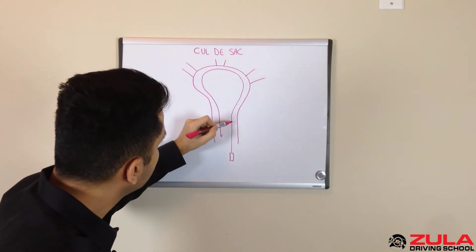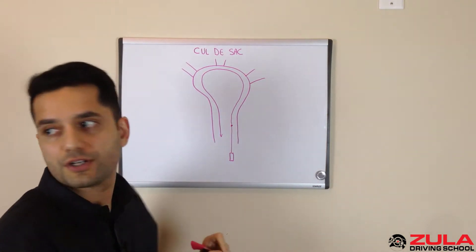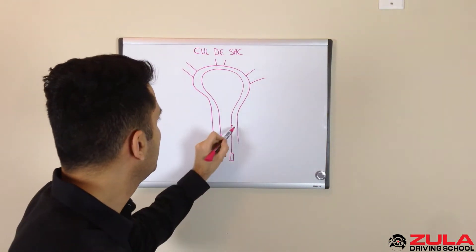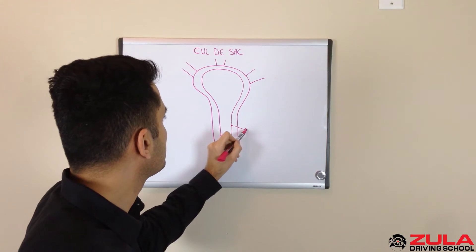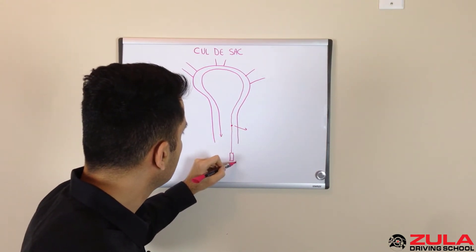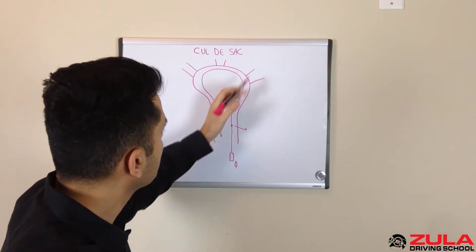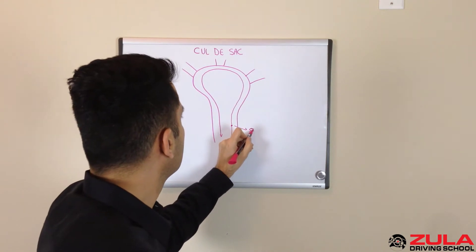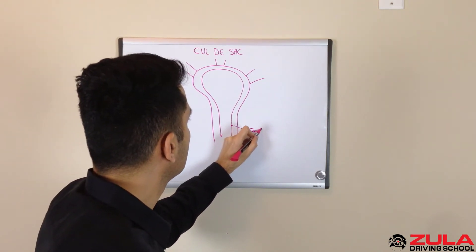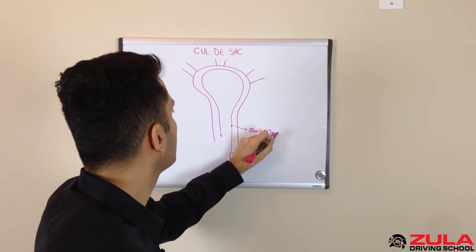However, before you get into the cul-de-sac, right about here, you need to shoulder check to the right to check if there's any cyclists beside you that you're not aware of. If you were to get into the cul-de-sac, you would cut them off. So shoulder check at this point.